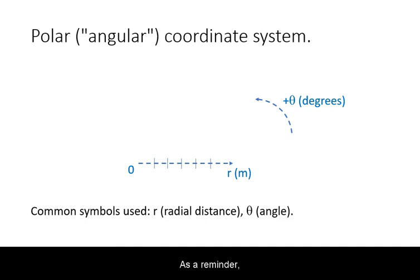As a reminder, in a polar coordinate system, a vector is referenced by radial distance or magnitude depending on the quantity, and the angle relative to a reference direction.